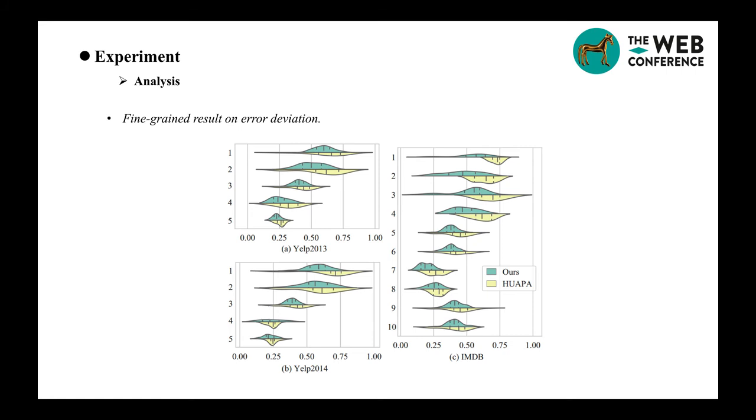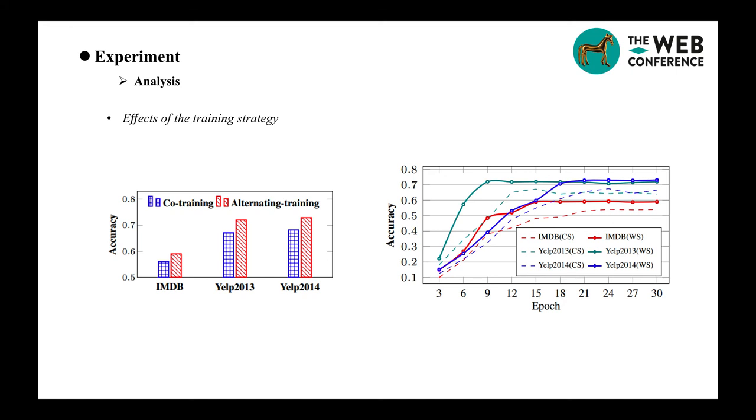We consider showing the fine-grained result on the error deviation. We make comparison with the best baseline. From the result, we learn that our model commits much lower errors for the highly biased scores than the other types of written scores. This reflects the robustness of our variational model on the data scarcity. Let's check the effects of the training strategy. Via these two experiments, we validate that our proposed alternating training and the warm starting training is of great effectiveness.